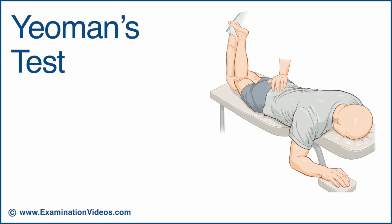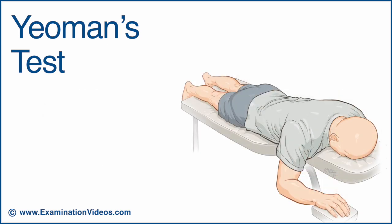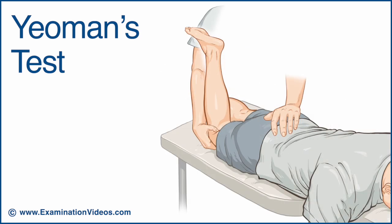The Yeoman's test is used to detect sacroiliac joint involvement. With the patient in the prone position, flex the knee to 90 degrees. Support the knee with one hand while placing the other over the posterior sacrum.